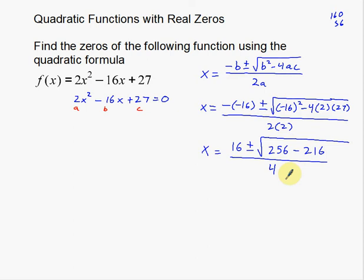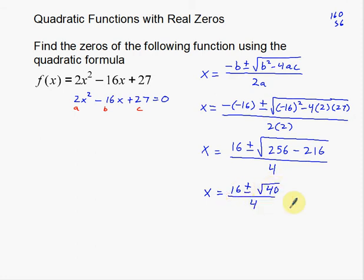I'm going to do a little bit of erasing here to make this nice and neat. As I go over this, 256 minus 216 is simply going to be 40. So x is equal to 16 plus or minus the square root of 40 all over 4. Now I said this was nice and neat — it kind of is — but the square root of 40 we actually don't know, so we have to simplify that just a little bit.